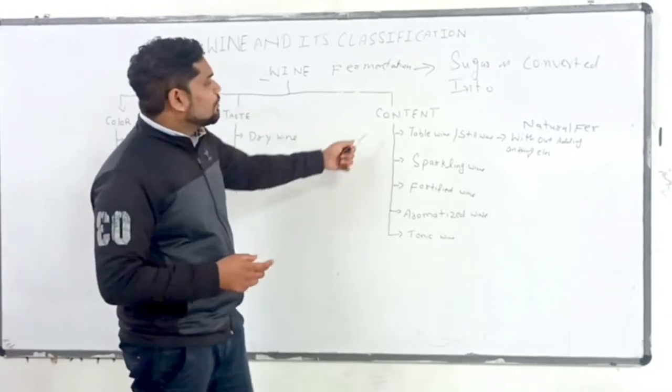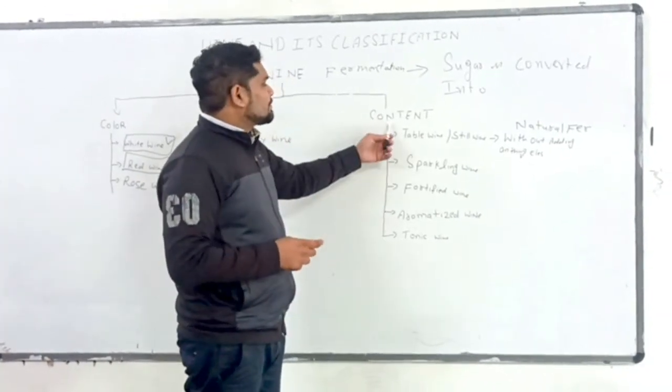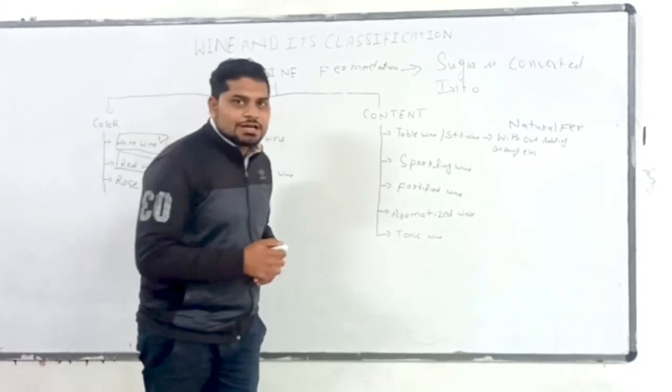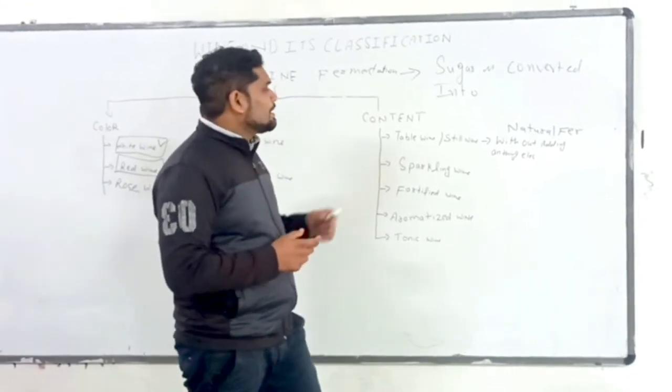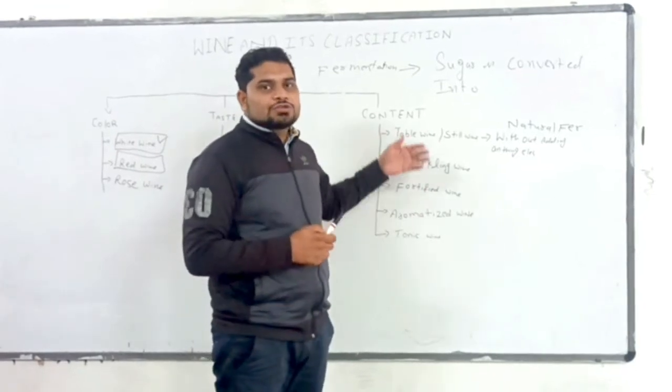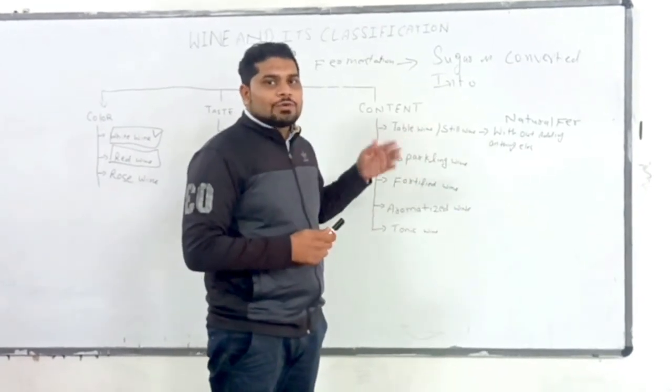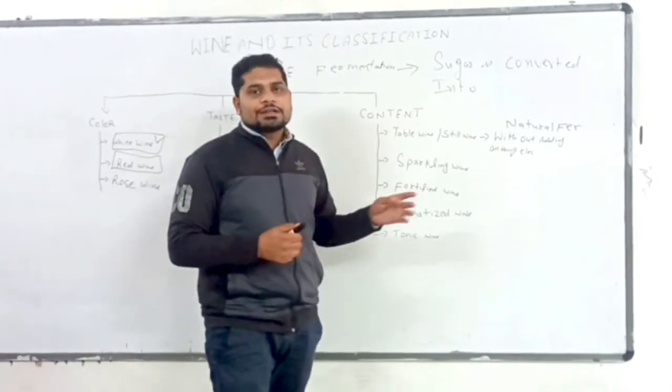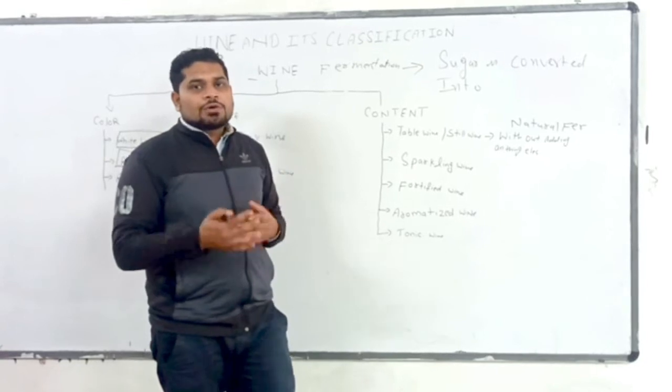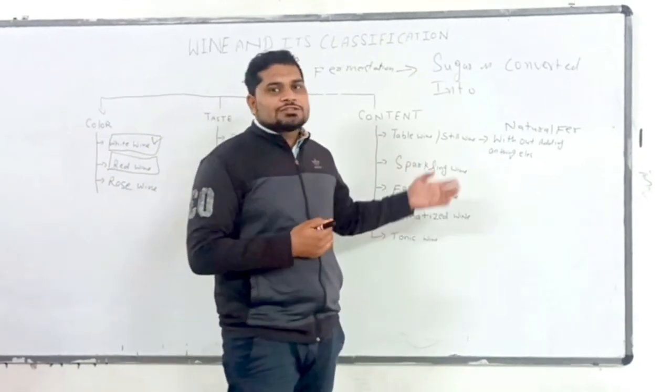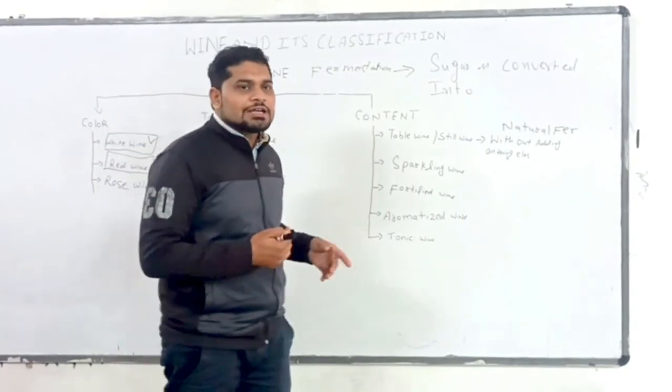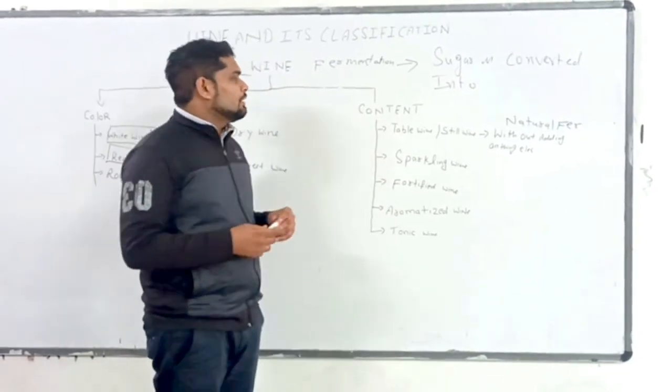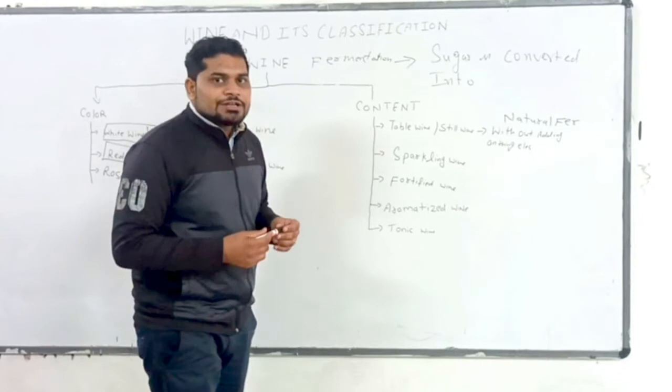Now we talk about classification according to the content. First one is table wine or still wine. Table wine is a naturally fermented alcohol which is made from the natural process, and there is no other alcohol like brandy, rum, gin, or tequila added. Because it's a natural fermentation wine.